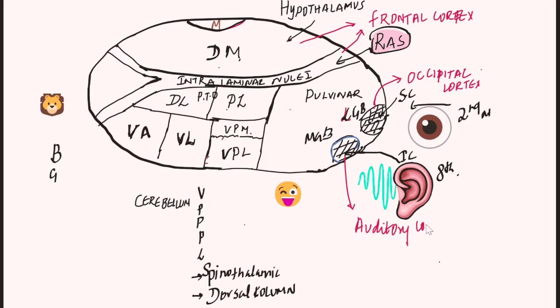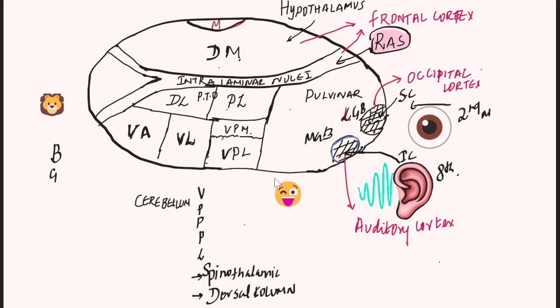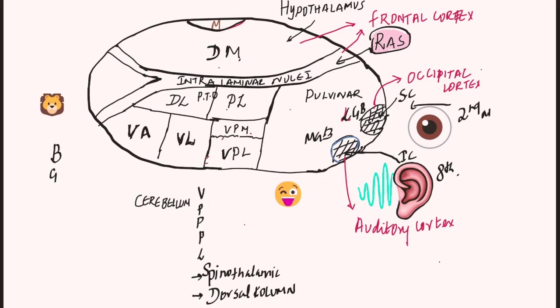And medial geniculate body. Now we have a very important thalamus structure and nuclei — that is our VPL nuclei.